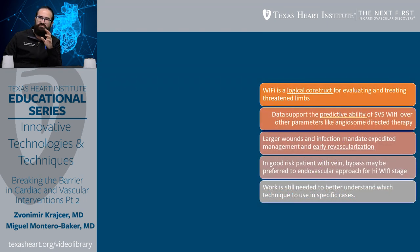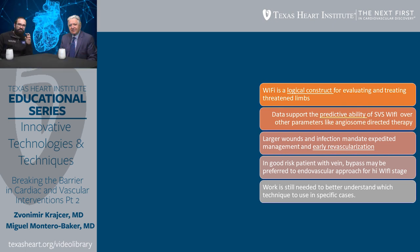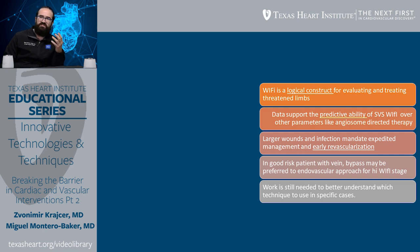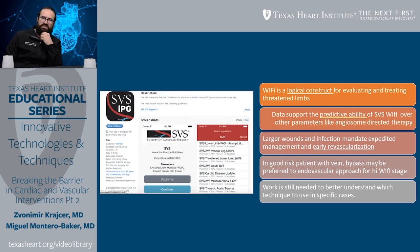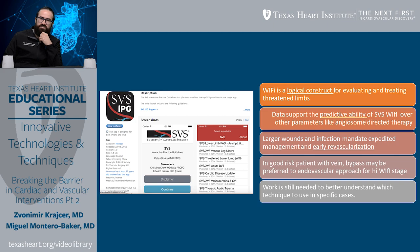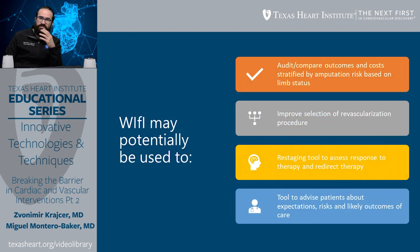So at least we're trying to subclassify patients better — creating a logical construct that allows you to evaluate and treat the patient, it allows some predictability. If you can tell the patient early on that this is a long course of action, then they may be clear on what the expectations are. It may identify those that could be revascularized early, and some people think that maybe depending on the WIfI stage, you should opt for an open versus an endo approach. For those of you that are tech-savvy, this is the Society of Vascular Surgery app. If you go and put it on your smartphone, you can actually classify your patients with WIfI — in exercises it takes about 20 seconds. In the future, it may be a way to audit and compare outcomes and costs, improve selection of revascularization, and it's a nice restaging tool to advise patients of what their expectations should be.